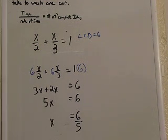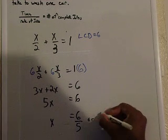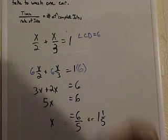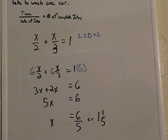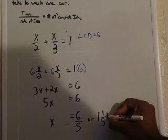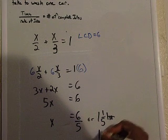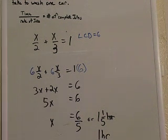Which is the same as one and one-fifth. And if we're speaking in terms of hours, so let's see here. Sixty times one-fifth of an hour. That's 12, so that's one hour and 12 minutes.